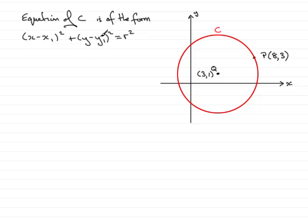Where x₁, y₁ are the coordinates of the center, so x₁ will be 3 and y₁ will be 1. And r is the radius of the circle. So if I just mark that in, that is the radius r of the circle. So I need to calculate what r squared is in order to find the equation of the circle.